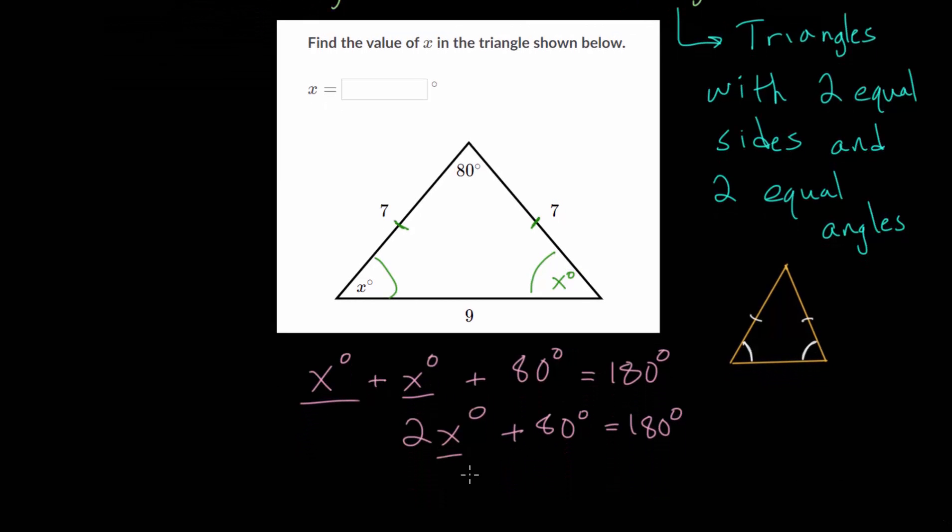And from here, we just need to solve for X. So let's subtract 80 on each side. And doing that, we'll cancel out the 80s on the left hand side, so that we get twice that angle measure of X is equal to 100.